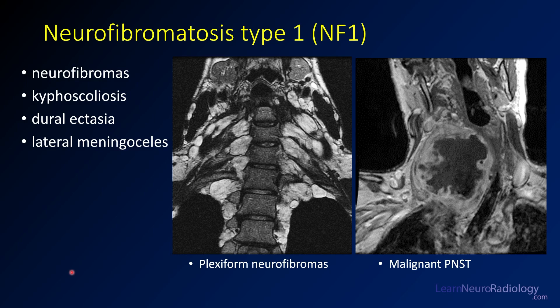Neurofibromatosis type 1 is a genetic abnormality associated with a mutation on chromosome 17. This syndrome involves neurofibromas, associated scoliosis, and dural ectasia. Patients can have lateral meningoceles — areas where the meninges protrude out of the spinal canal. Here you see a coronal T2 image of plexiform neurofibromas: many neurofibromas along the nerve roots, flowing together. What makes a neurofibroma plexiform is that it involves more than one adjacent nerve root.